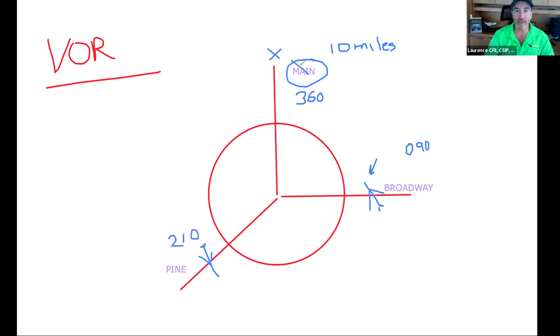So now this aircraft is 10 miles from the VOR on the 360 radial. Concur? Concur. Right. How about this one? He's crossing what radial? Still crossing the 90 radial. The Broadway on the 90 radial. Right. And then this one, the 210. The 210. Great.